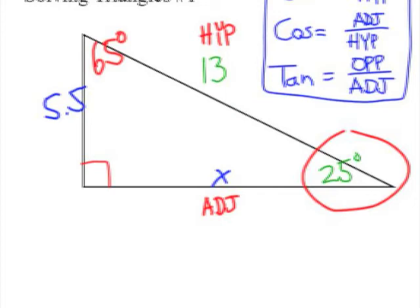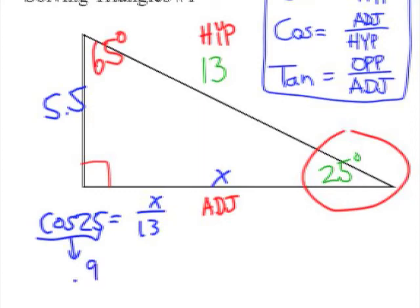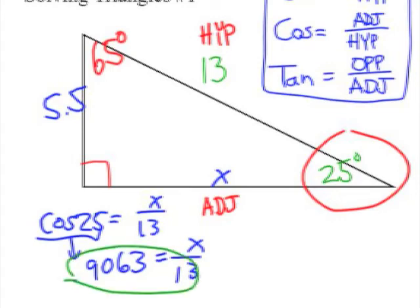So my equation this time would be cosine of 25 degrees equals x over 13. Find the cosine value, which is 0.9063, multiply by 13 to get our answer. The horizontal leg is 11.8.